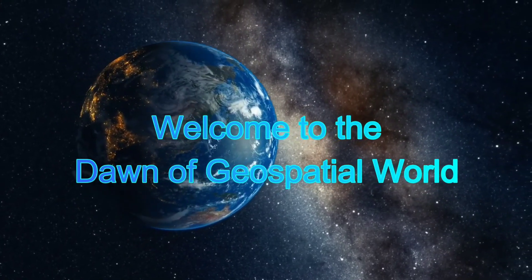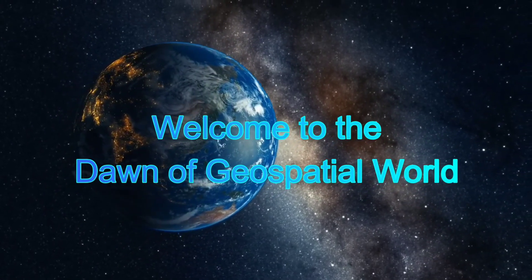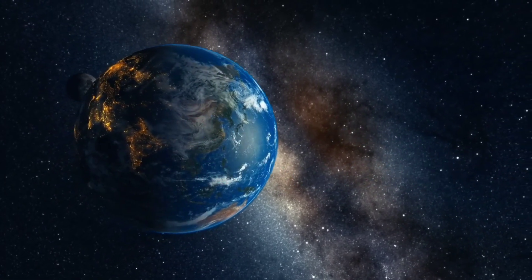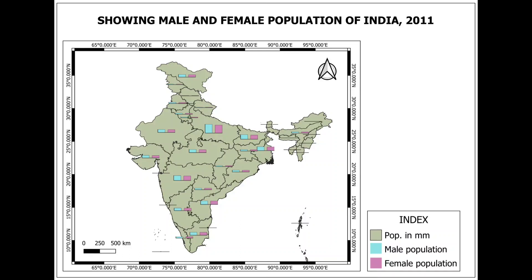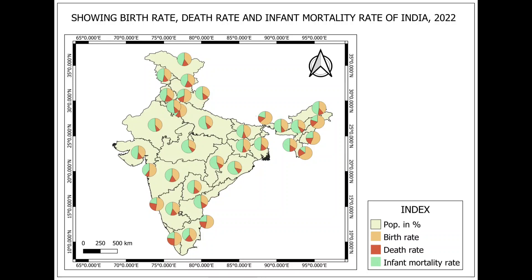Hey viewers, welcome to the dawn of geospatial world. Today's topic is on how to make a choropleth map, one-dimensional diagram, and proportional diagram using QGIS tools. So let's start.